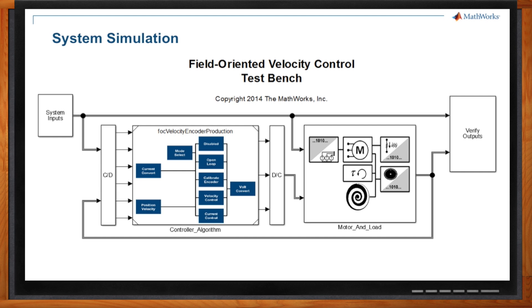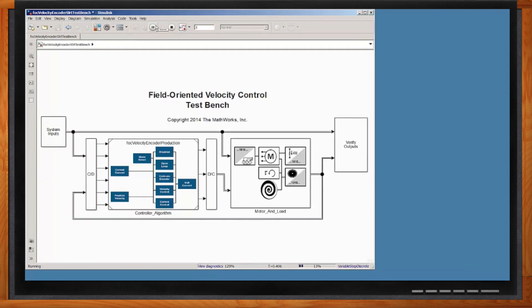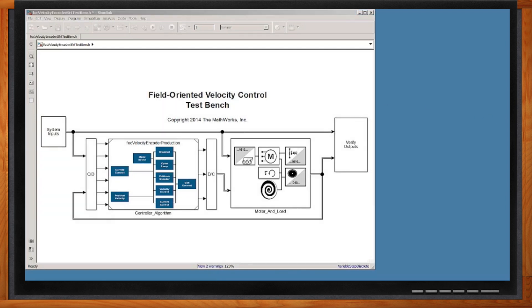This is our block diagram of the system we're going to be working with, and we'll dig into it more as we really do get into the demo. This is our system that we're going to be simulating. We'll hit the play button, and this is going to be a field-oriented controller doing velocity control. We're running the simulation now — we'll bring up the results.